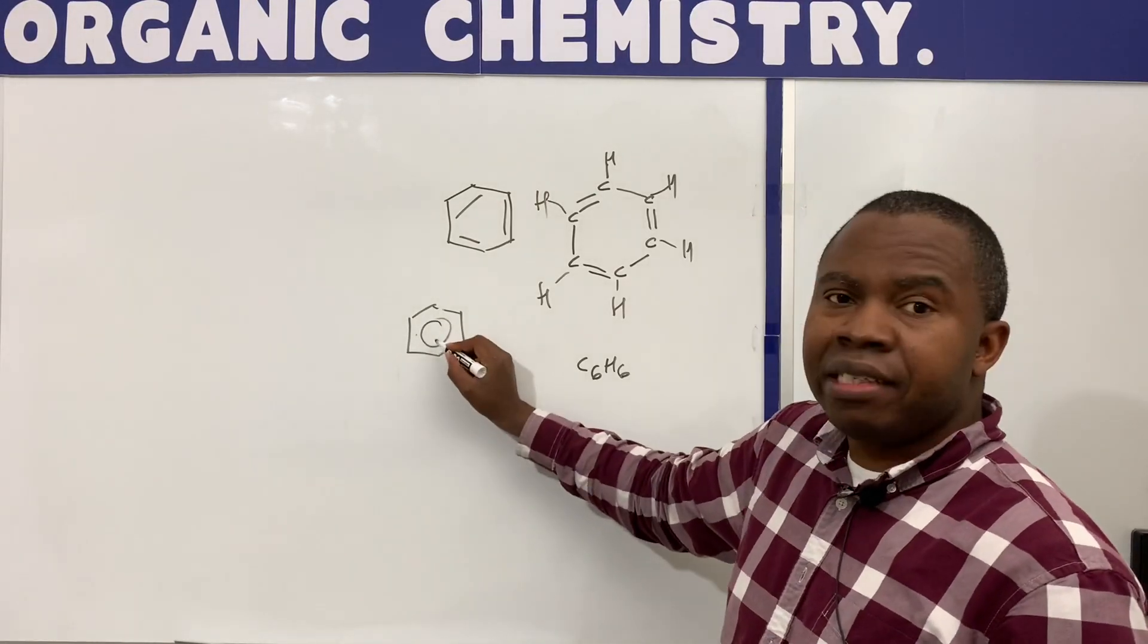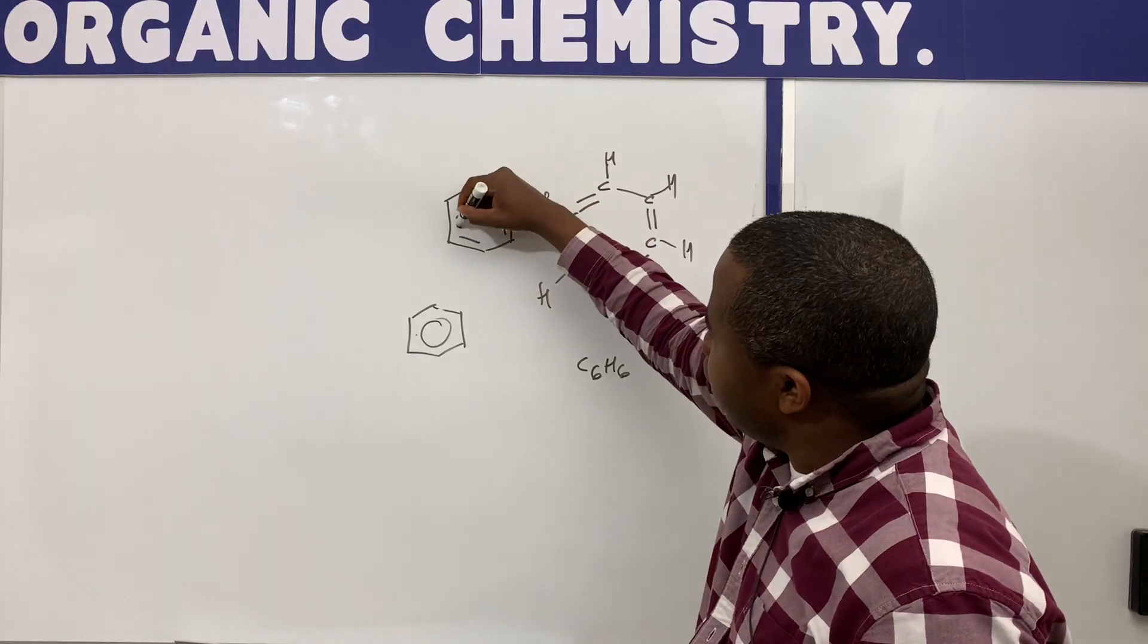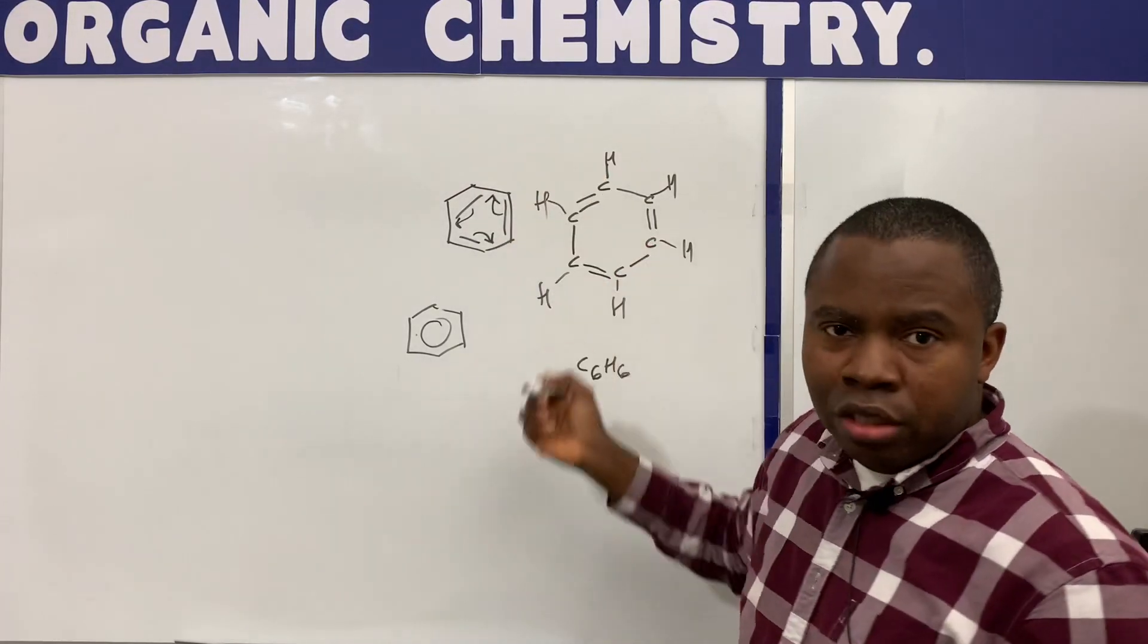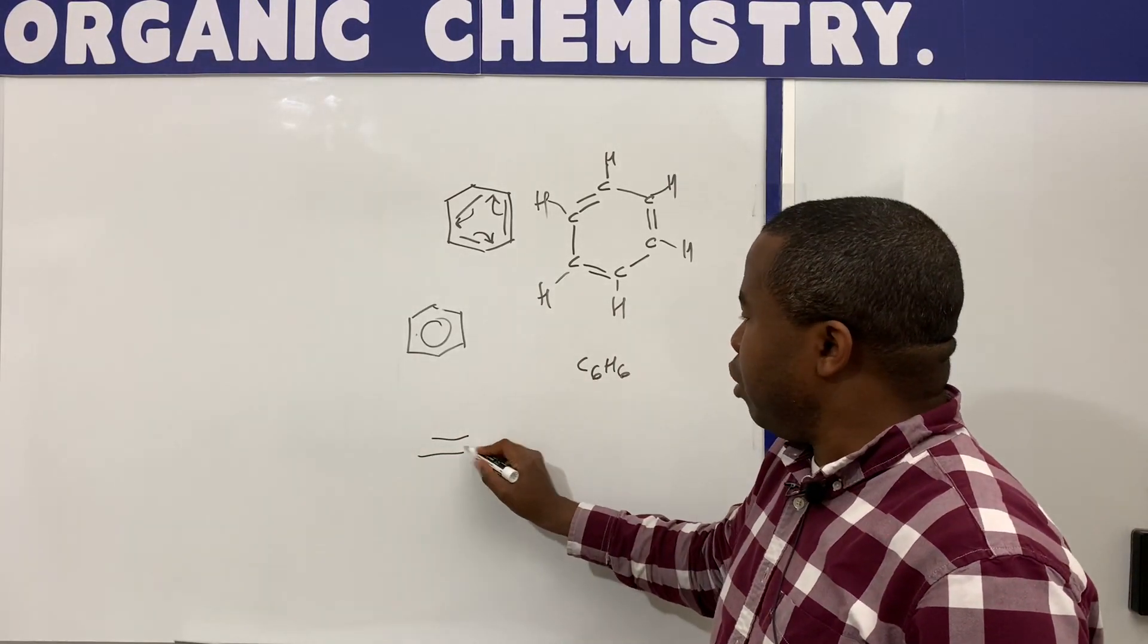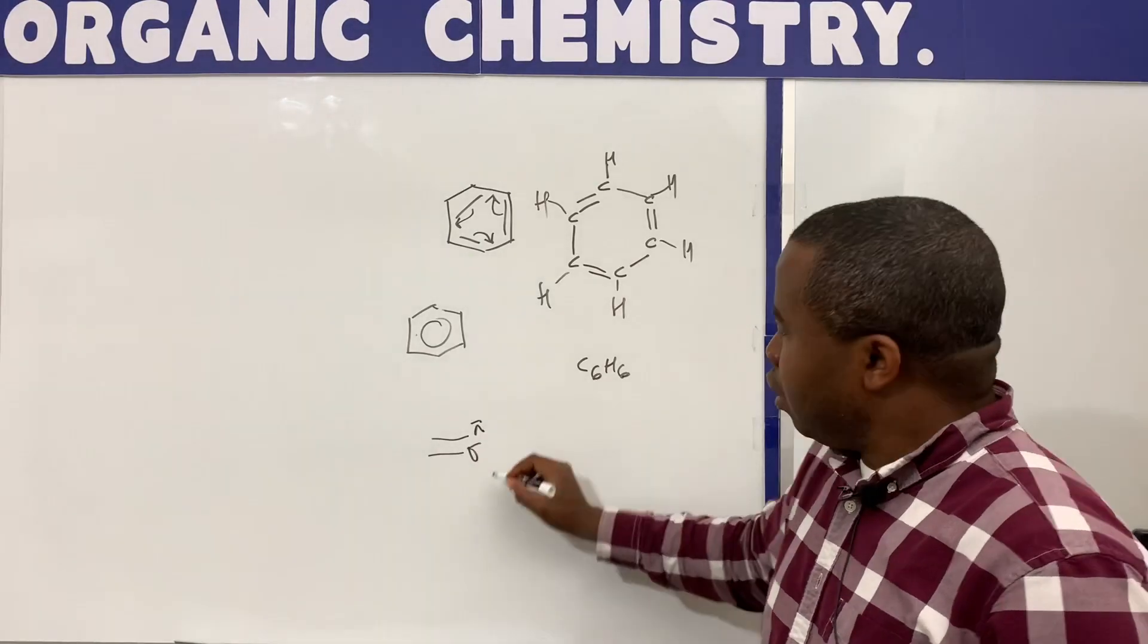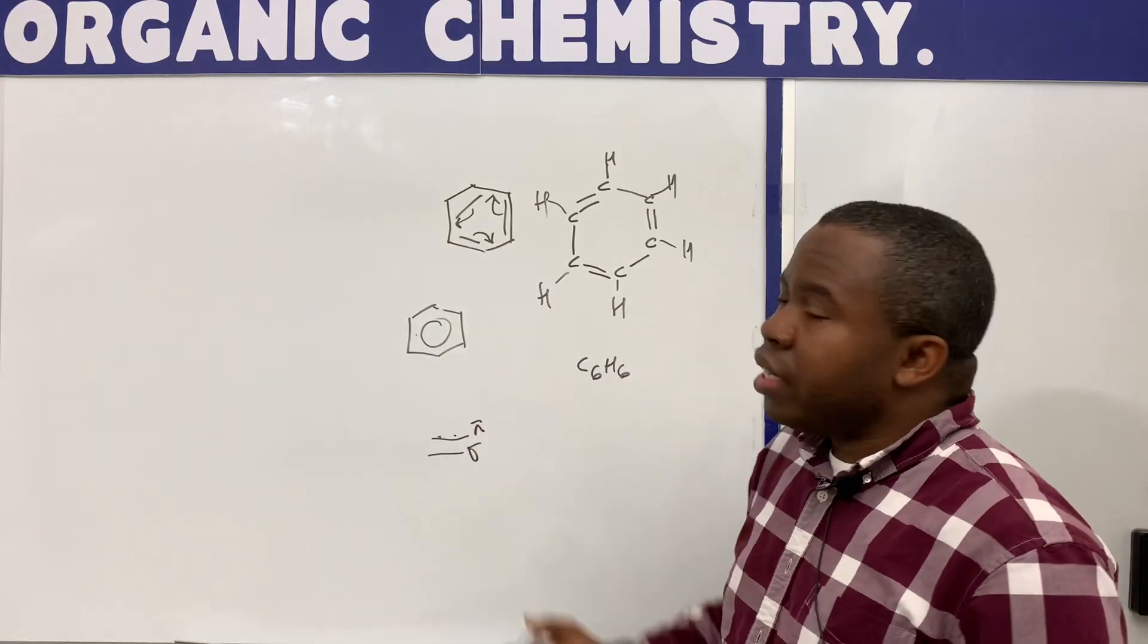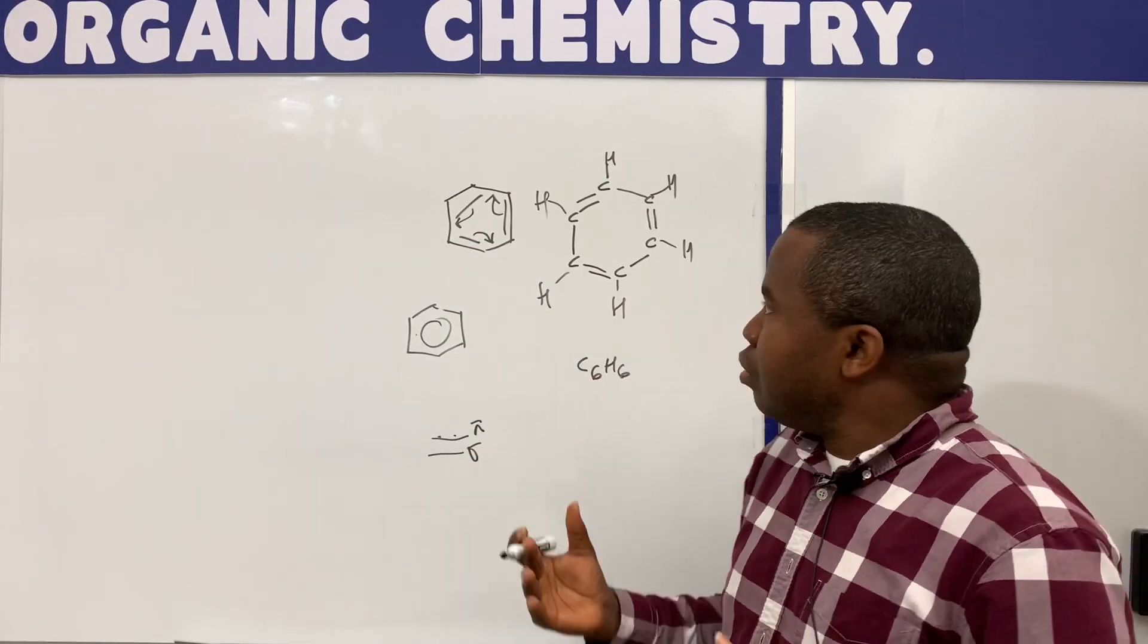They are delocalized. They don't have a fixed location. In organic chemistry, when you have a double bond, one of the bonds is usually a sigma bond and the other is the pi bond. So the pi electrons are always moving around in benzene, and that is why we say benzene pi electrons are delocalized into the ring.